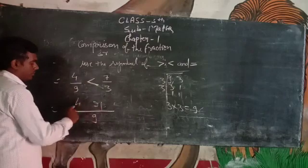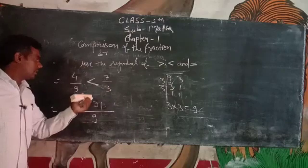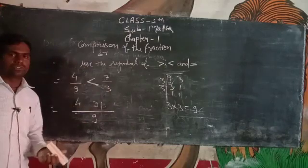Is tarah yahan par yeh agar greater hota, to hum yeh greater ki sign use karte hain. Agar yahan 4, 4, dono side equal hote hain, to hum beech mein equal ka sign. Equal ke symbol ka use karte hain.